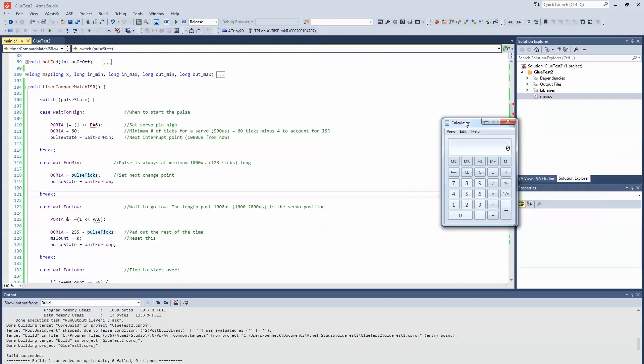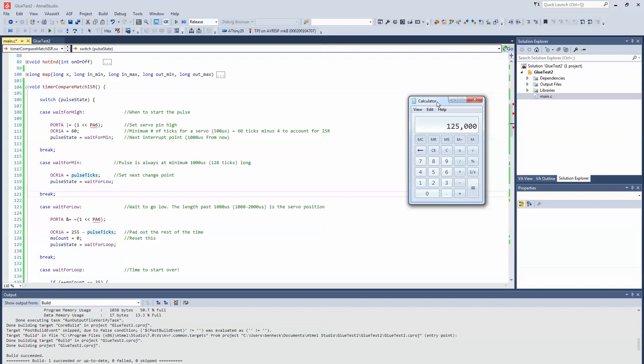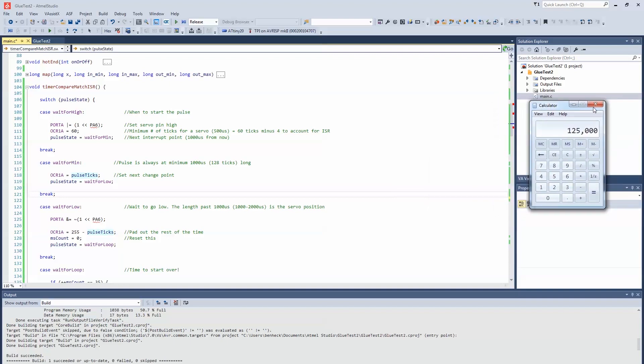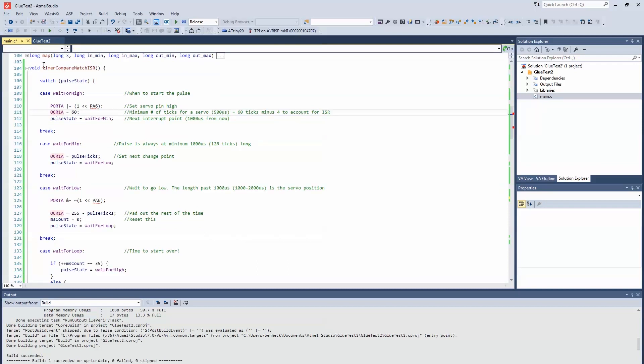All right. So we have a prescaler of 64. So we take 8,000 divided by 64. That gets us 125,000 calls to the ISR, interrupt service routine, per second. And here's what happens in the interrupt service routine. There are multiple states. So the first state is wait for high. That's when we turn the pulse high. So we set the pin high. Then we wait for 60 counts, which is approximately 512 microseconds. And then we set the state to the next state.